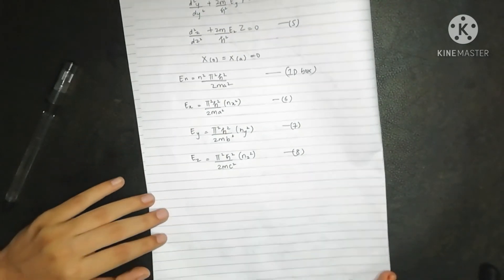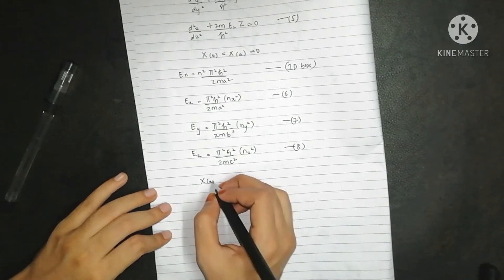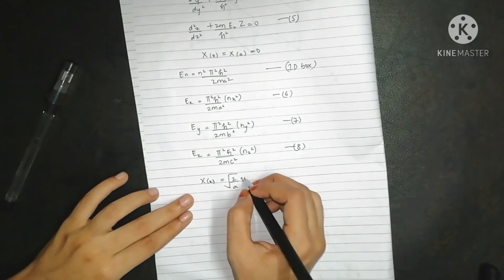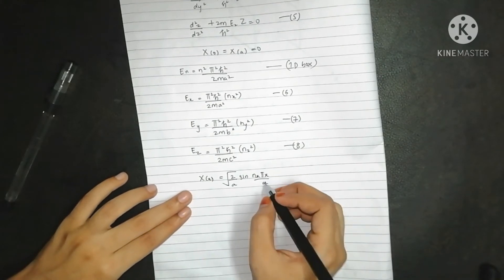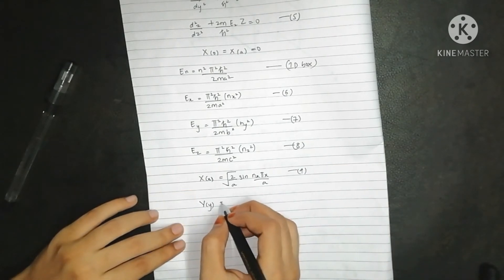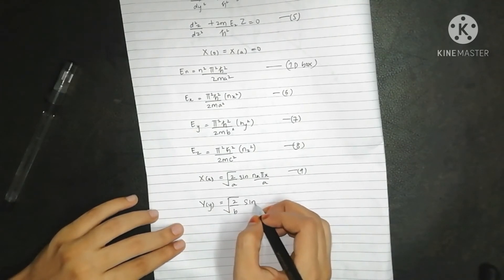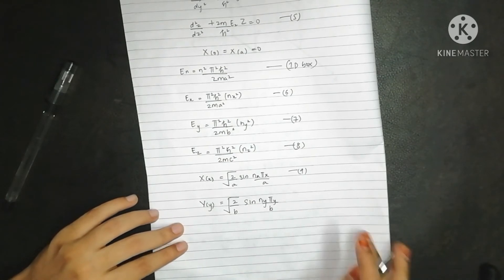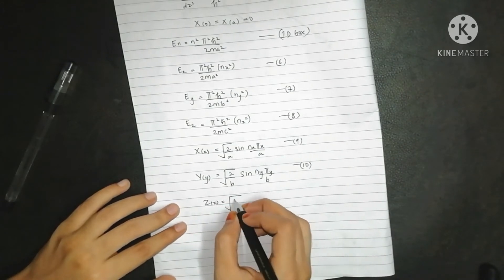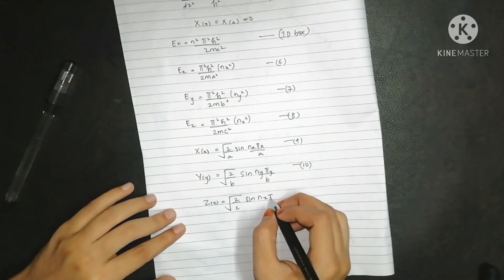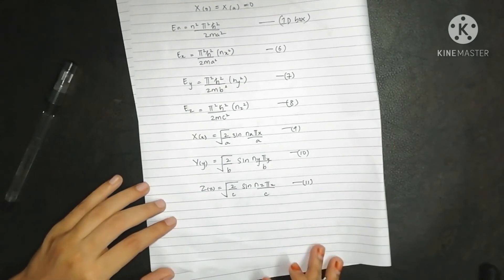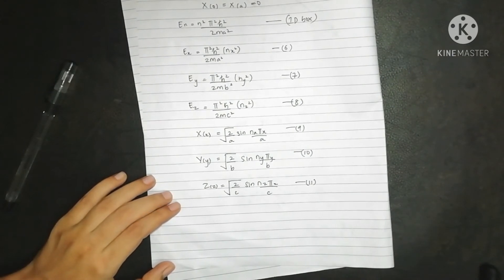The wave functions for each direction are: X(x) = √(2/a)·sin(nx·π·x/a) (equation 9), Y(y) = √(2/b)·sin(ny·π·y/b) (equation 10), and Z(z) = √(2/c)·sin(nz·π·z/c) (equation 11).